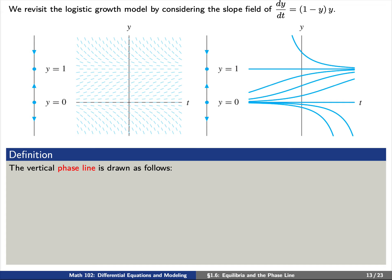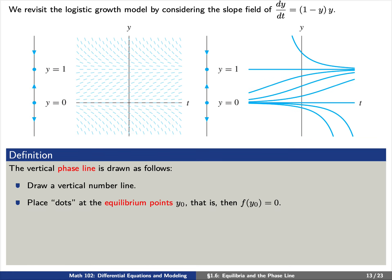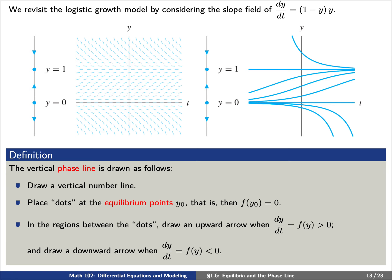We'll draw phase lines as follows. First, we draw a vertical number line depending on the variable y. Second, we place dots at the equilibrium points y₀ — recall that an equilibrium point satisfies f(y₀) equals 0. For our two phase lines, the equilibrium points are at y equals 0 and y equals 1. Finally, in the regions between these dots, we draw an upward arrow if f(y) is positive (meaning the solution is increasing), or a downward arrow if f(y) is negative (meaning the solution is decreasing). These arrows appear in the three regions: y less than 0, y between 0 and 1, and y greater than 1.